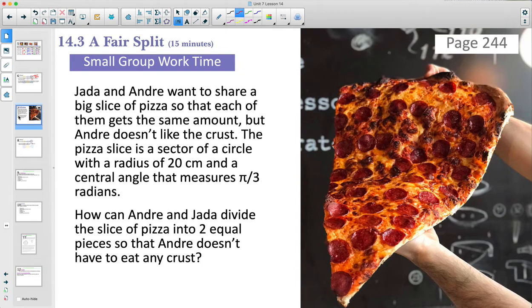All right. Then in 14.3, it's on page 244, we've got this huge slice of pizza here. And Jada and Andre are wanting to share this big slice of pizza. But they want to get the same amount. The problem is that Andre doesn't like crust. And so how are we going to divide the pizza equally between them so that they get the same amount of pizza? And again, the issue here is that Andre doesn't like crust. So we can't just cut the pizza and slice in half like this and just give each of them half because he's not going to eat the crust. So how can we think about splitting this up equally?